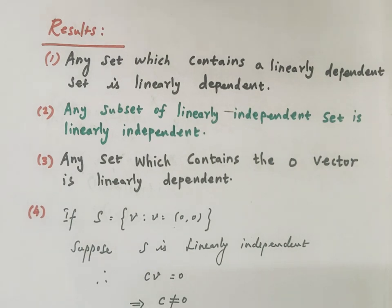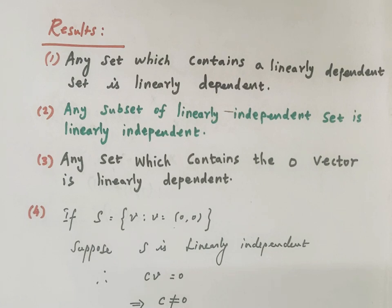Subset of a linearly dependent set is linearly dependent — that is the first statement. Any set which contains a linearly dependent set is linearly dependent — second statement. Any subset of a linearly independent set is linearly independent — that is also a known result.